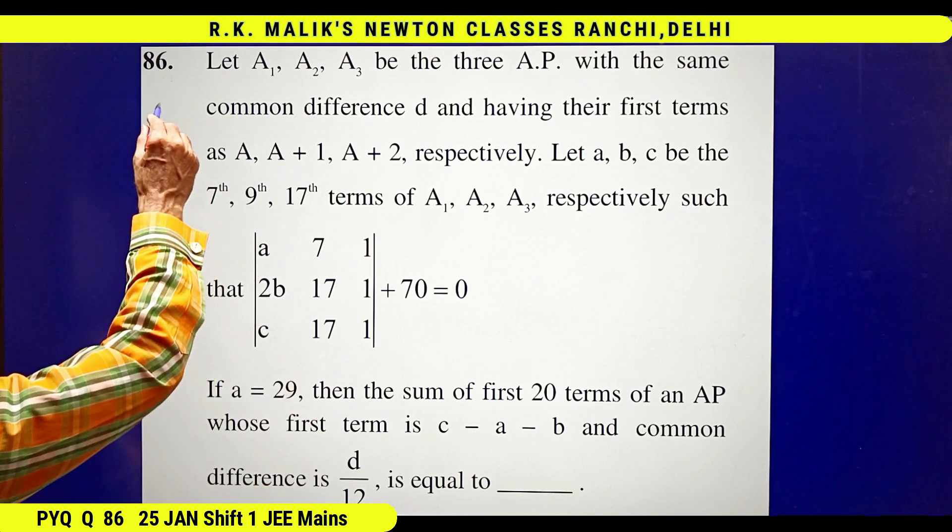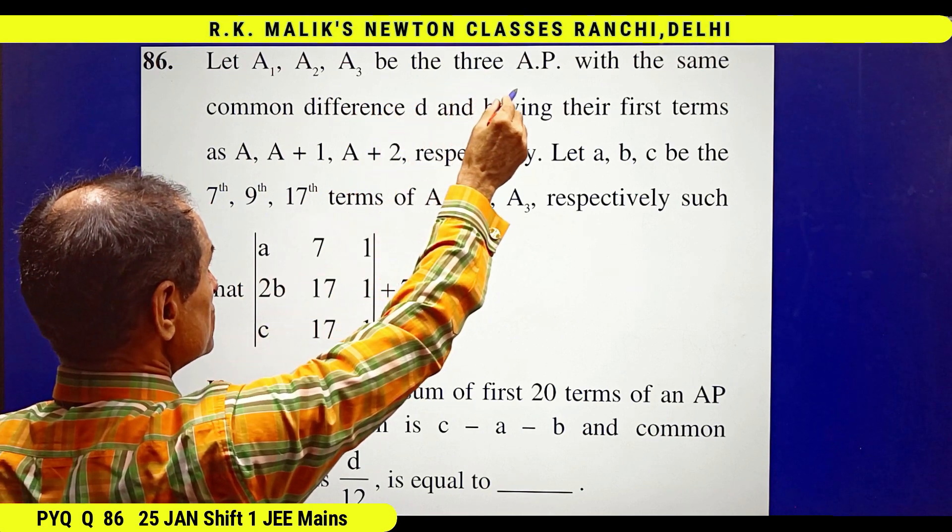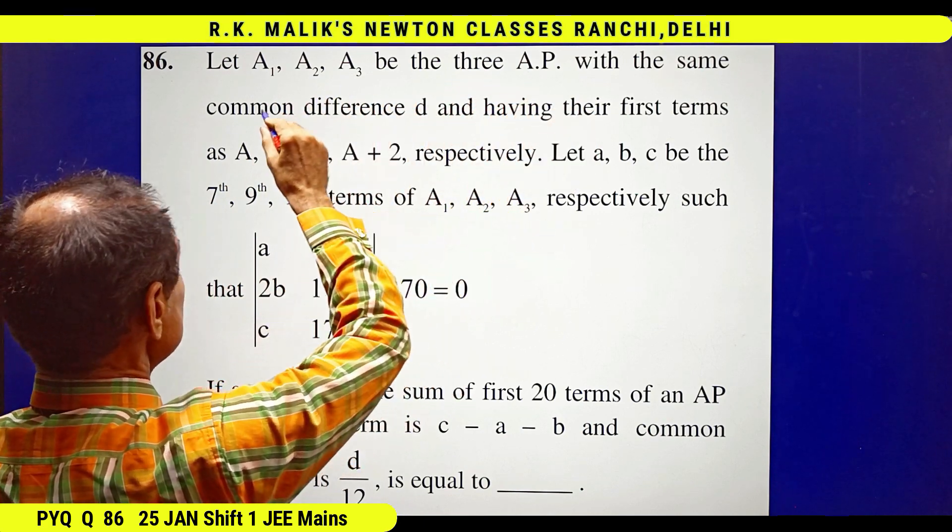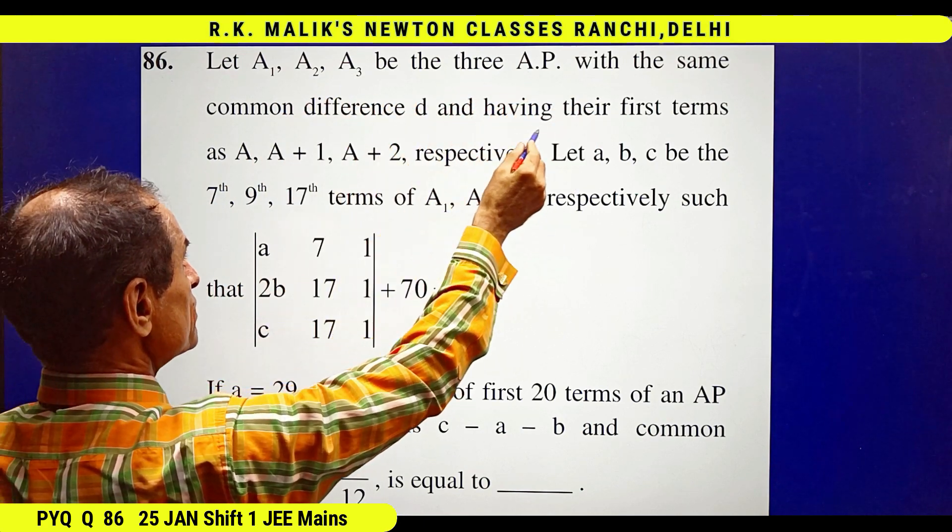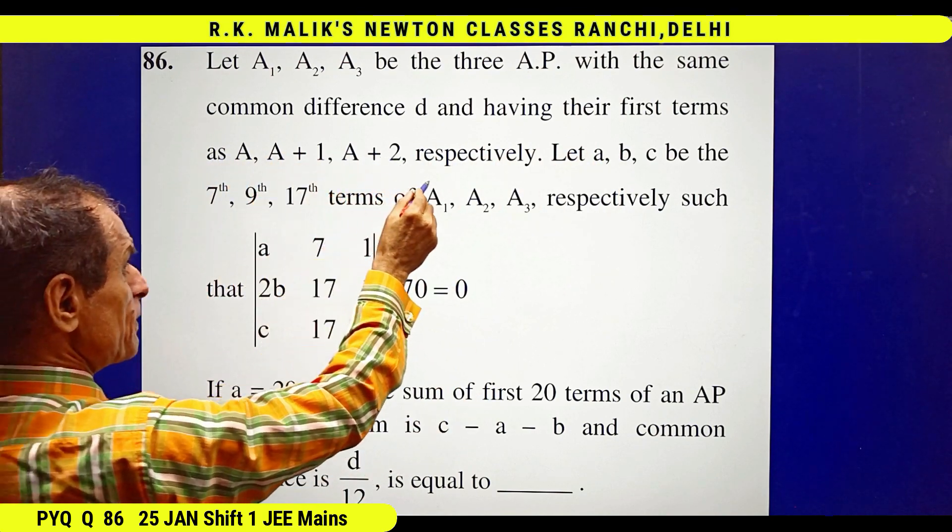In this question it is given that let A₁, A₂, and A₃ be three APs with the same common difference D and having their first terms as A, A plus 1, and A plus 2 respectively.